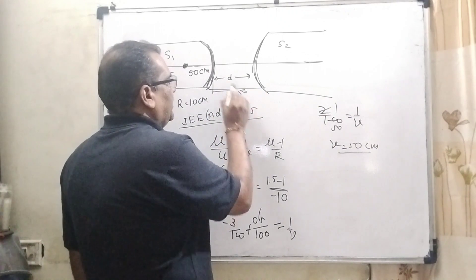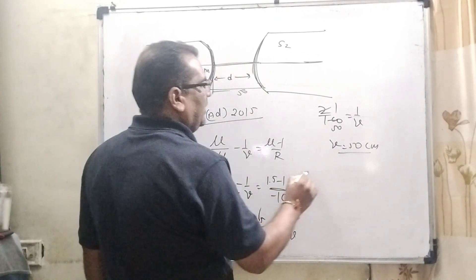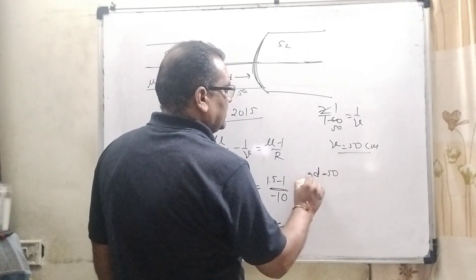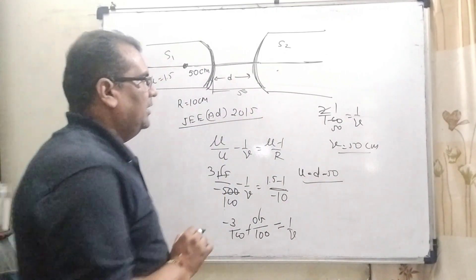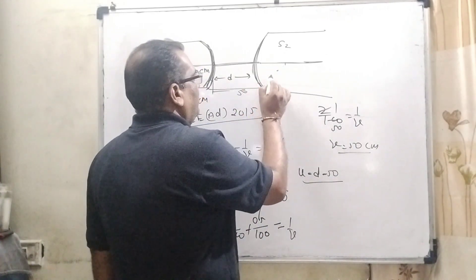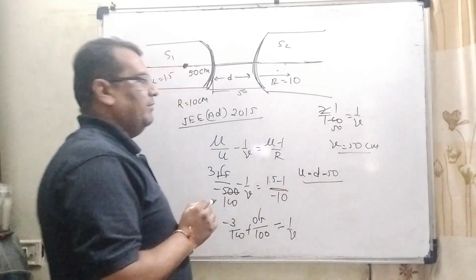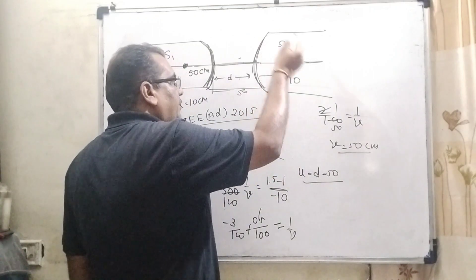So, 50 centimeter. Total distance is D. And this is 50 centimeter. The remaining distance is D minus 50. So, this becomes U for this surface. Is it clear? And R is the same but here we have taken positive because of right side sign convention rule. And here we are using rarer medium to denser medium.